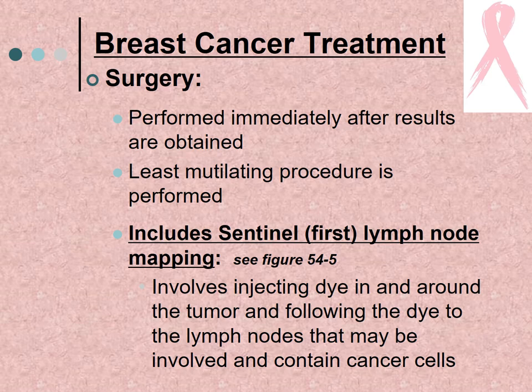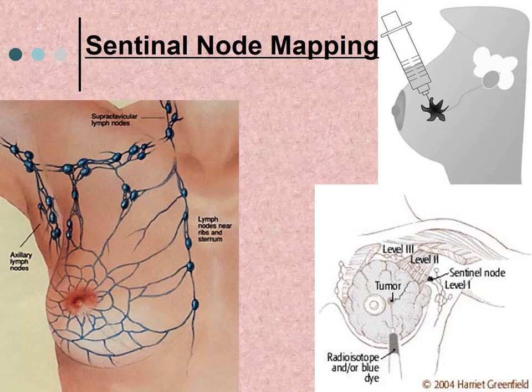Surgery includes sentinel node mapping. The sentinel node is the first lymph node that the cancer would spread to. Dye is injected in and around the tumor and followed to the lymph nodes that may be involved and contain cancer cells.